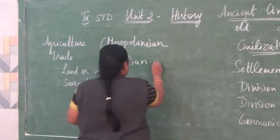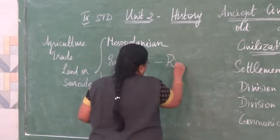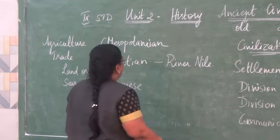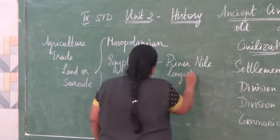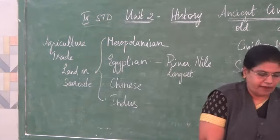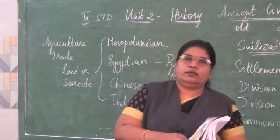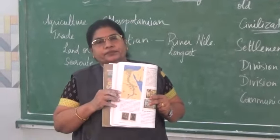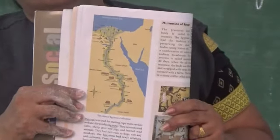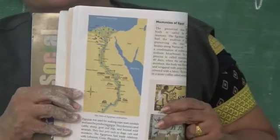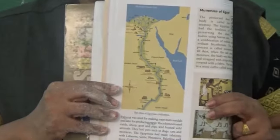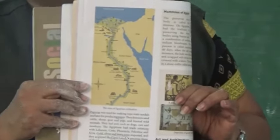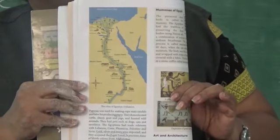We are going to learn about the Egyptian civilization first. The river Nile in Egypt is the longest river. Egypt is in Africa, in the northernmost part. The river Nile originates from Lake Victoria and drains into the sea. Egypt is bound by the Mediterranean and the Red Sea. Both sides of the river Nile is a desert — only the places near the river were fertile.